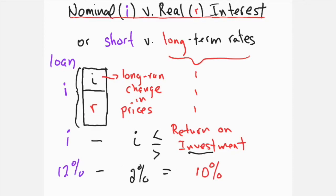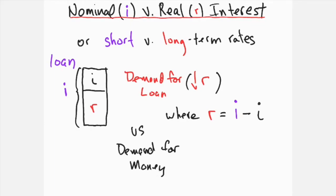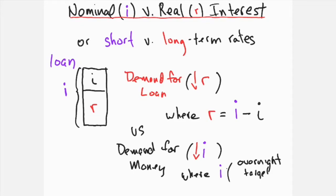The two percent inflation plus the ten percent return equals twelve percent; if rates increase beyond twelve percent, the investment is likely to lose money. In either case, the demand for a loan is based on the inflation-adjusted real interest rate. Conversely, nominal short-run interest rates are used to determine the need for money, based on the overnight target rate set by the Bank of Canada plus an added premium, as advertised on savings accounts or short-term treasury bills.